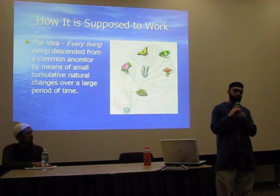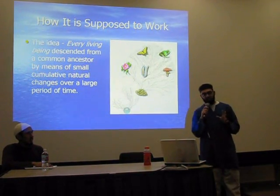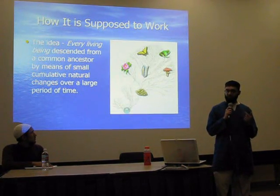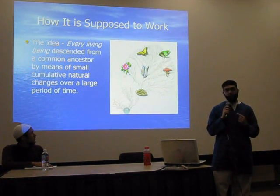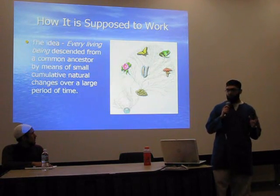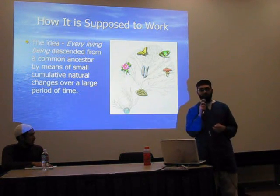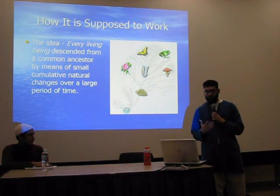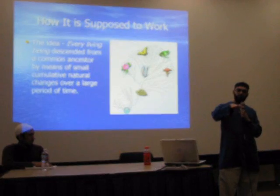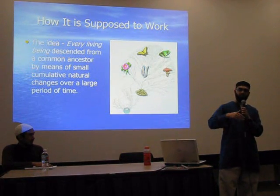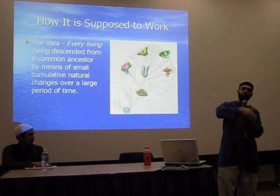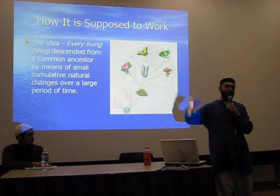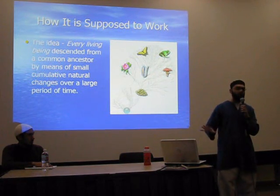Now, how is it supposed to work? The idea is that every living being descended from a common ancestor by means of small, cumulative, natural changes over a long period of time. Here's what they call the tree of life — this is a more modern one, there are older ones as well. Basically, the theory says every single living being had an ancestor, and one of those ancestors evolved into the current living thing we see, and that's how we can explain all life on Earth.